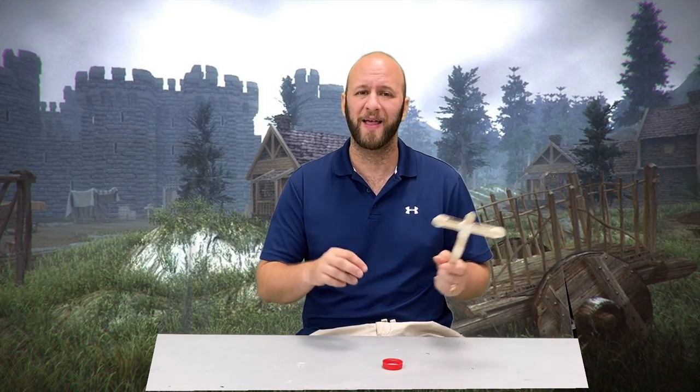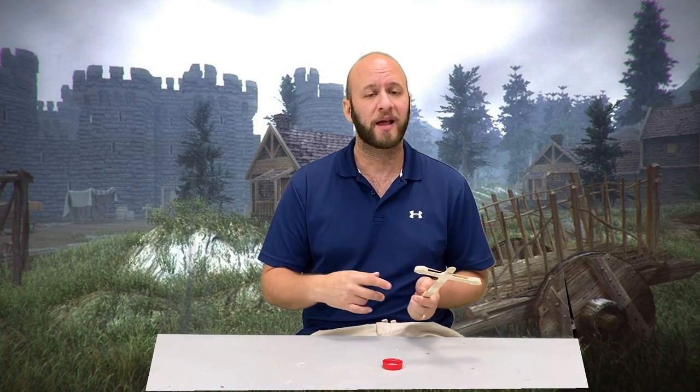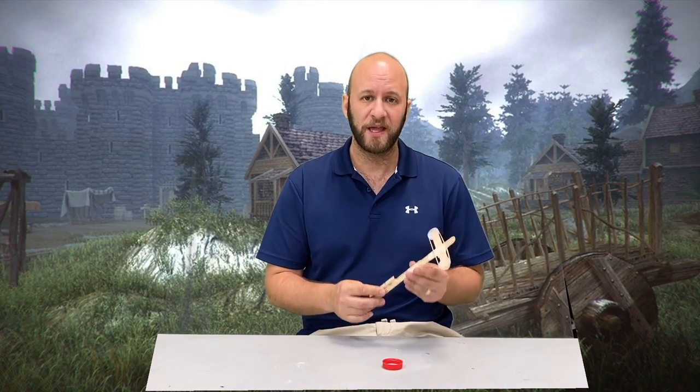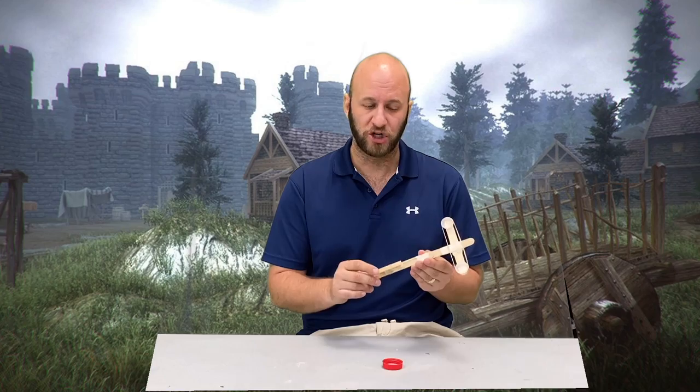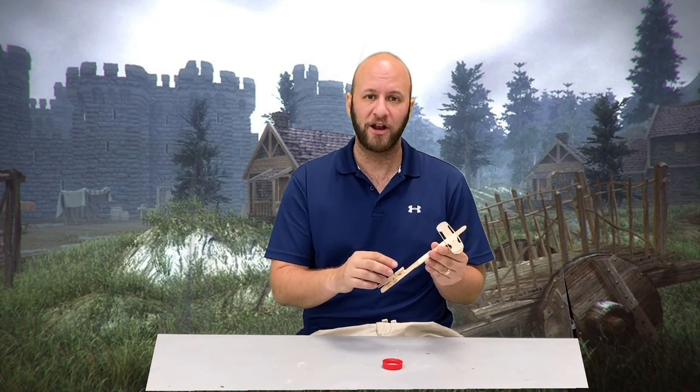Unlike crossbows or the scorpio which rely on the bending of the wooden limbs to cause the projectile to spring forward, this version of the scorpion launcher relies on the elastic energy stored in our rubber band. So when we pull back and load our bolt...